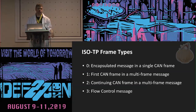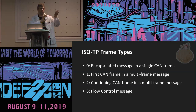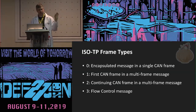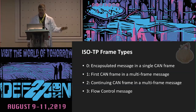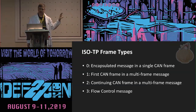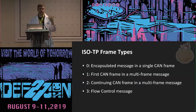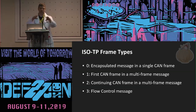ISOTP has a couple of different frame types. Basically, the first nibble of the CAN data frame indicates what type of message it is. Since it's a limited subset of values, it can make it really easy to see large data transfers, which is one of the nice things about UDS — it makes it easy to just visually look at it and see that something is happening.